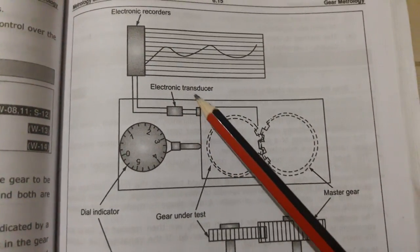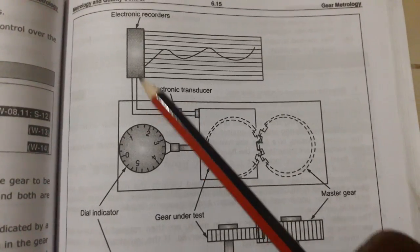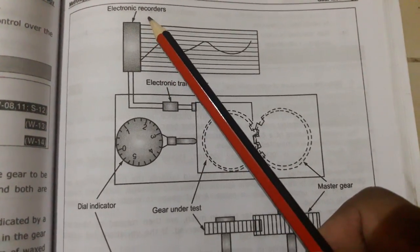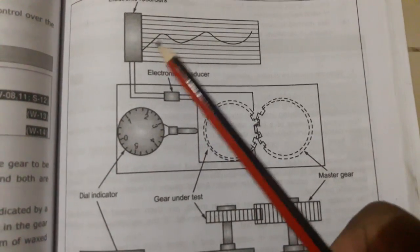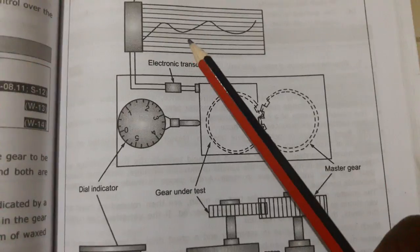Here we have an electronic transducer which takes the signal to the electronic recorder, which records the movement of the gear under test on the waxed paper chart.